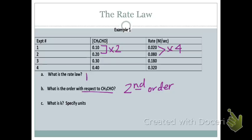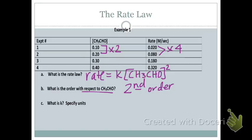When I write the rate law, it looks like: Rate = K[CH₃CHO]². My CH₃CHO is second order, and because there's only one reactant, the reaction is second order overall.